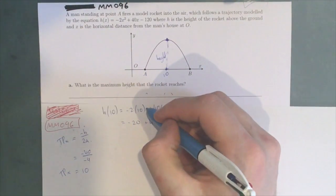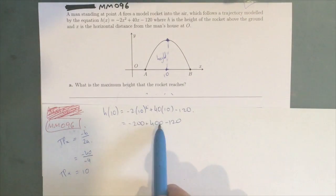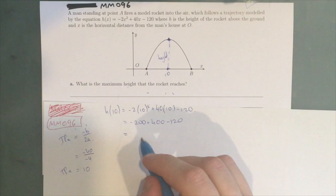Oh, my bad. This is meant to be squared here, which means that is -200 + 400 - 120, which gives us 80.